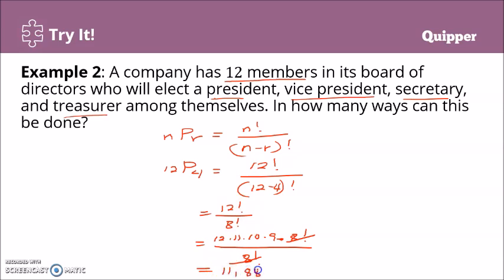Using your calculator, you can just go ahead and key in 12, shift, x for your nPr function, and then 4. You'll have 11,880. So, 11,880 ways.